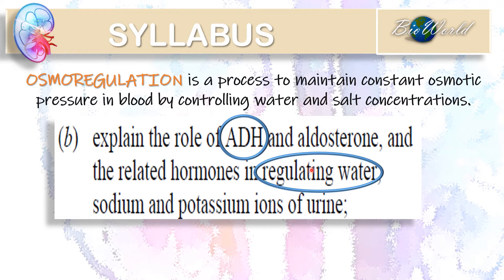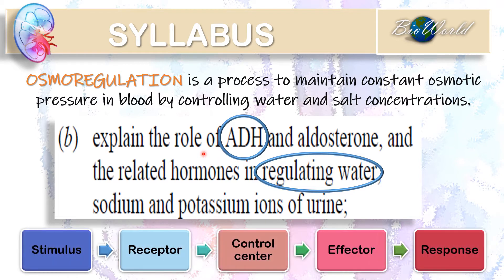To explain the process, we shall break it down into: stimulus, receptor, control centre, effector, and response. Let's start with the stimulus.